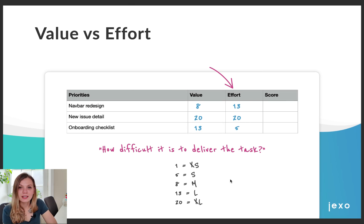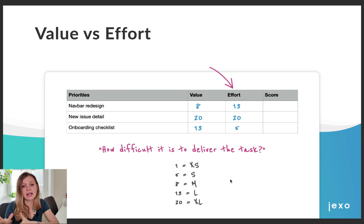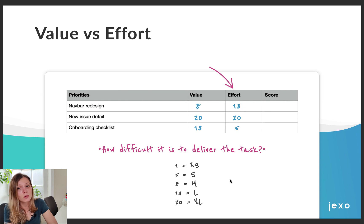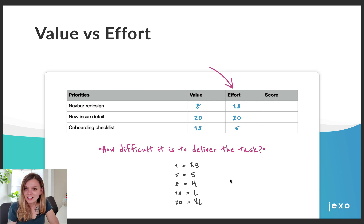The next metric is effort. Here you need to evaluate how difficult it is to deliver the task. Make sure you include the effort of everyone involved in the process — from research, design, development, testing, and even marketing. We tend to underestimate how much something will take, especially when only development effort is included. Some UI changes might be quick to build but can have a big impact on documentation you didn't even think of. We like to use t-shirt size estimation so people don't feel committed to specific timelines.